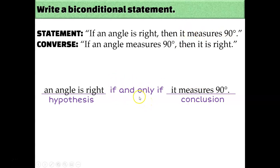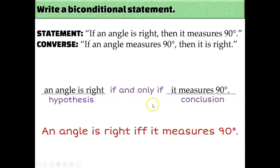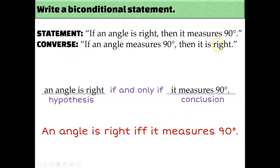If you prefer, you can abbreviate 'if and only if' as IFF. So you can say: an angle is right, IFF, it measures 90 degrees. That's how you write a biconditional statement — it's what you write when the converse is true.